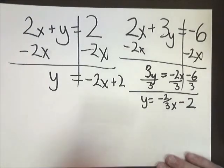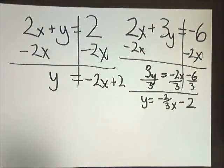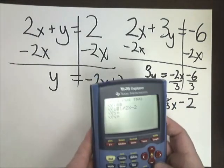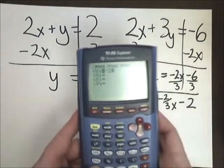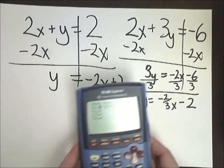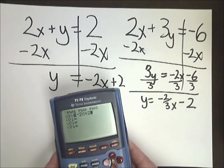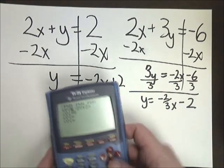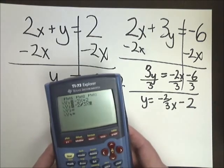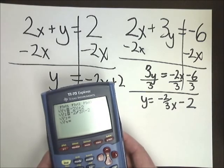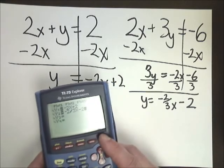So you see the slopes aren't the same here. So this is going to be one that I'm going to have to graph. So I'm going to go in and graph them. Y equals negative 2X plus 2. I don't know if you can see it or not. I didn't think about the glare. Negative 2X plus 2. And I'm going to click down and do Y is equal to negative 2 thirds X minus 2. Just like that. Then I'm going to hit the graph button here.